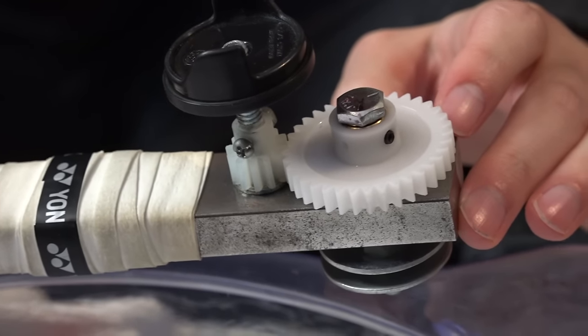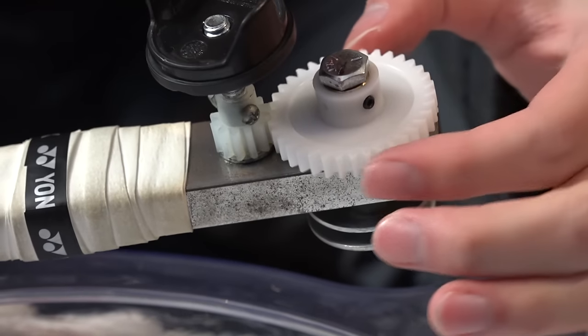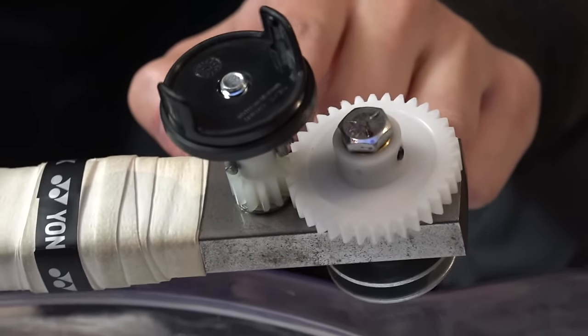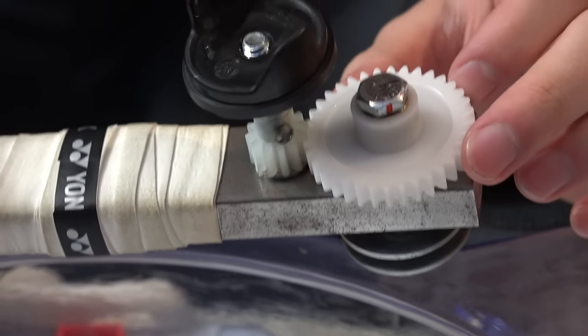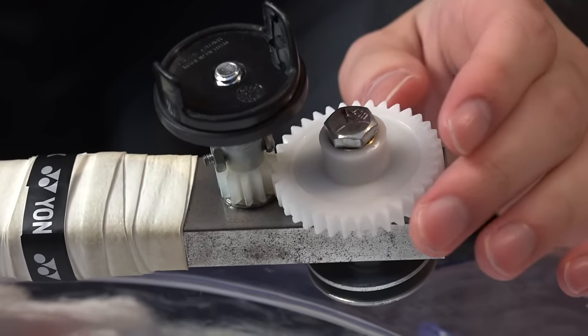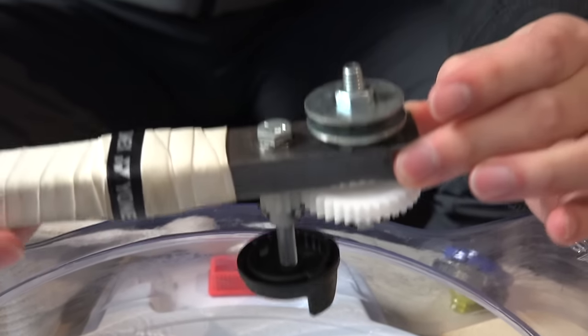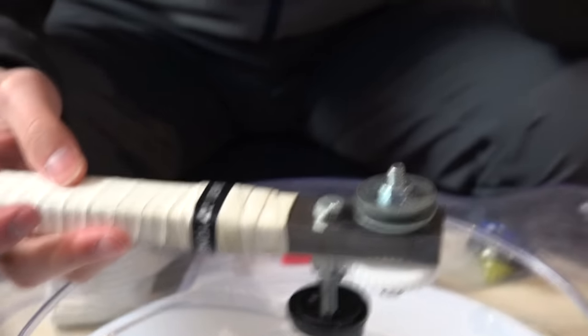You basically have a gear multiplier. This is a bigger wheel, so when this moves, basically it causes this smaller wheel to move really, really quickly. So that's how we were able to get that high speed. You guys will see and hear the difference. Make sure you listen closely, okay?